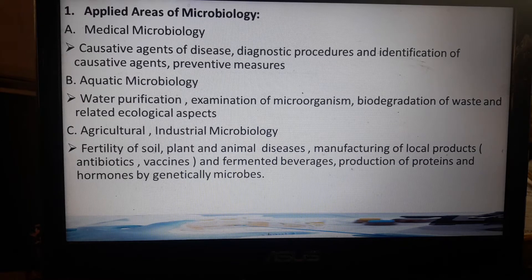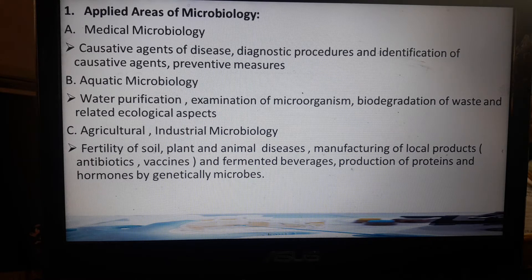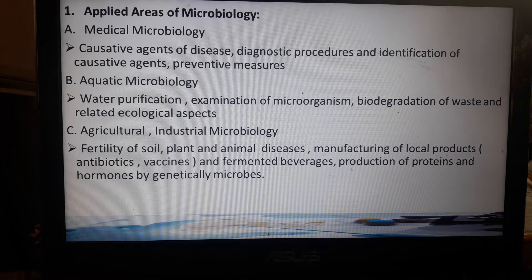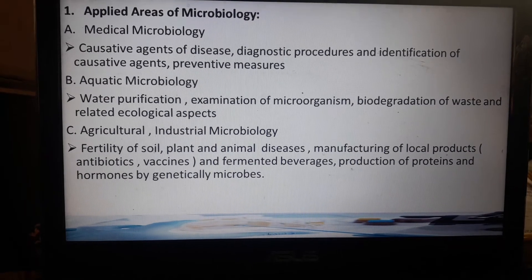Agricultural and industrial microbiology refers to the study of microbiology in agricultural and industrial aspects. Examples include the fertility of soil, because there are some bacteria that can fertilize soil, as well as plant and animal diseases. Other examples include the manufacturing of local products, vaccines, antibiotics, fermented beverages, and production of proteins and hormones by genetically engineered microorganisms — for example, Lactobacillus used in producing Yakult and in the fermentation of alcohol.